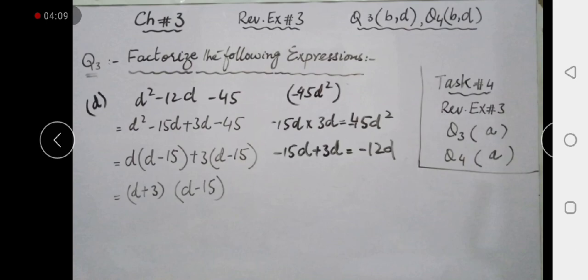And this is the part which you can have minus 45. Minus 15, minus 12, plus sign. When we multiply then minus 45 and when we subtract minus 12, minus 15 plus 3d, d common, d-15 then here plus 3. So d plus 3 and d-15 is the answer.